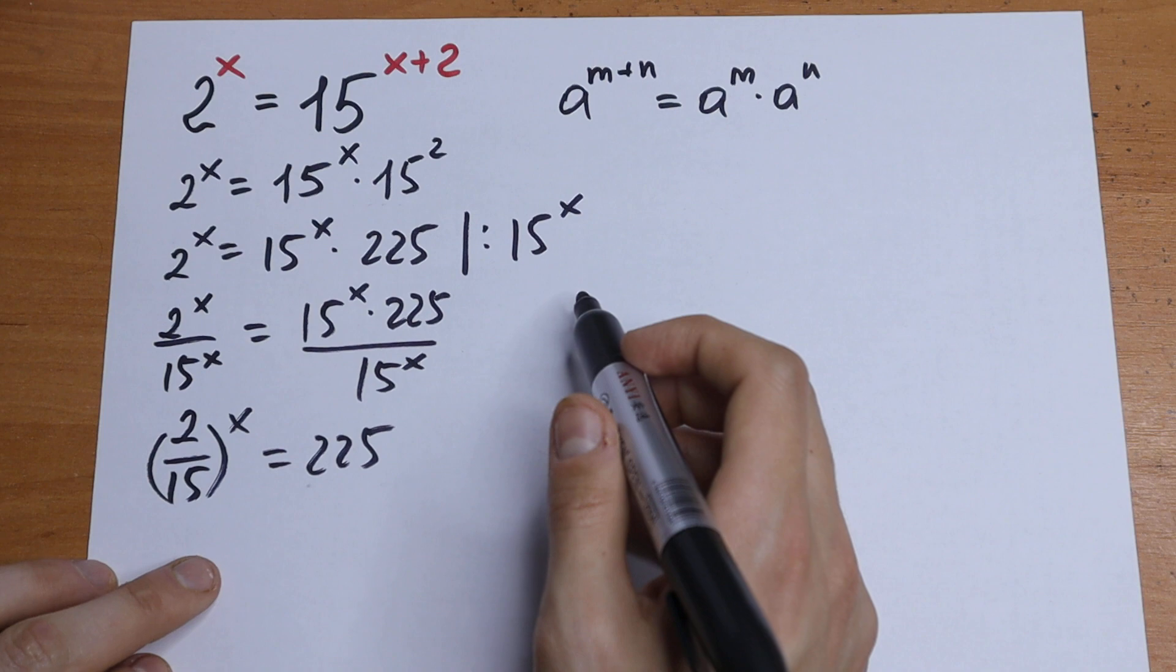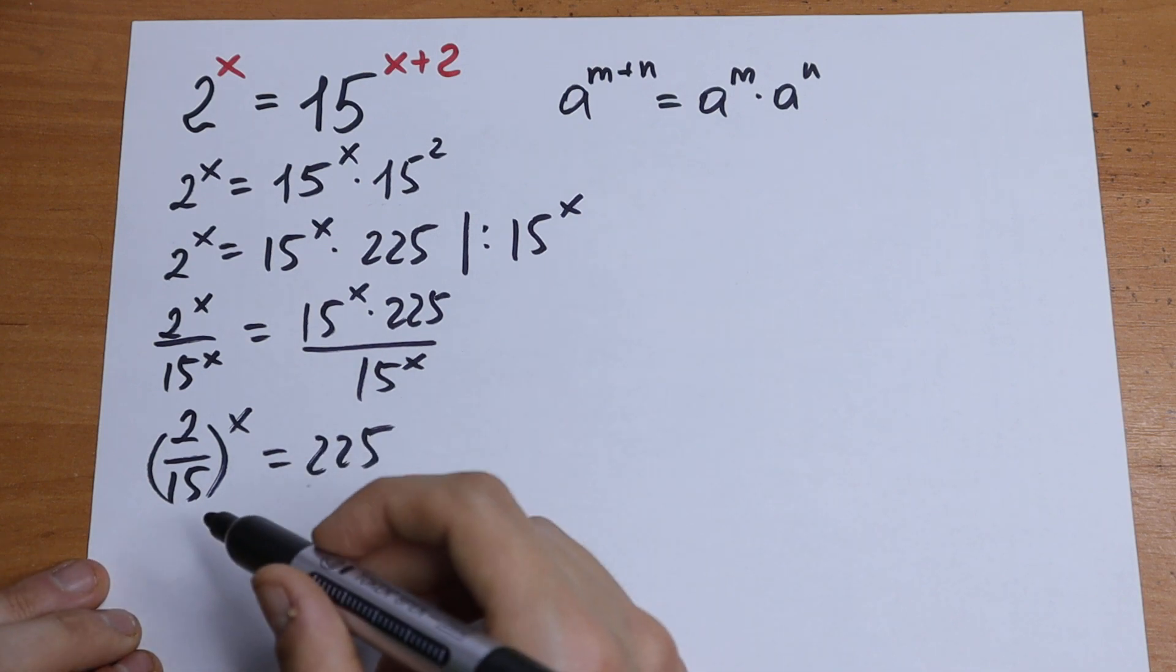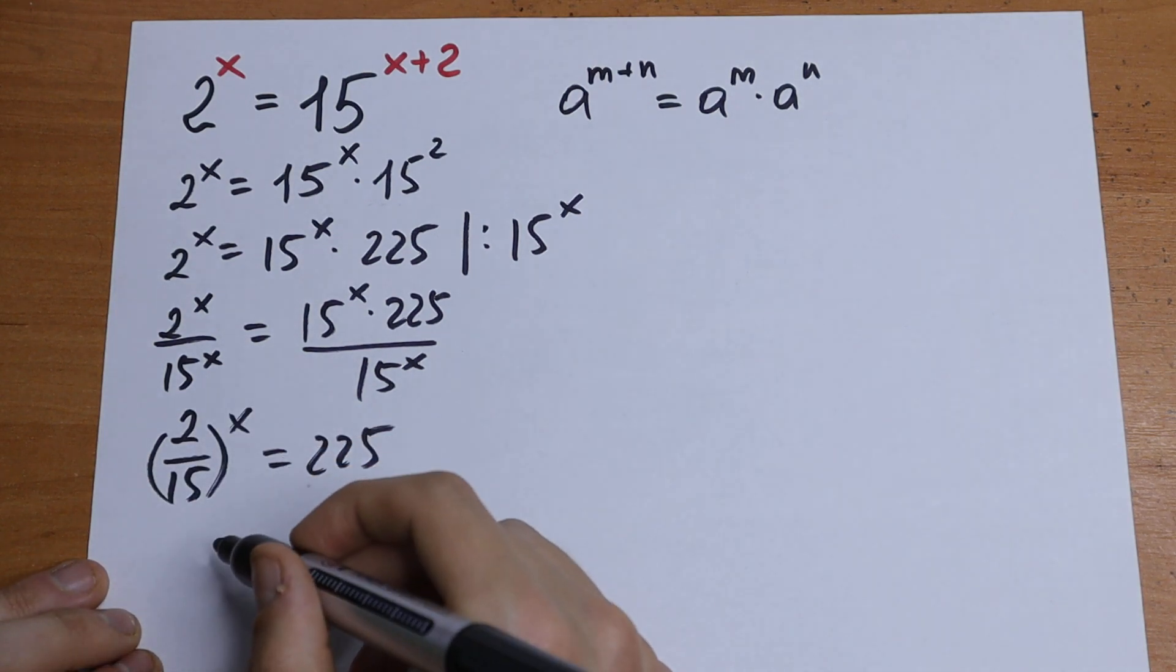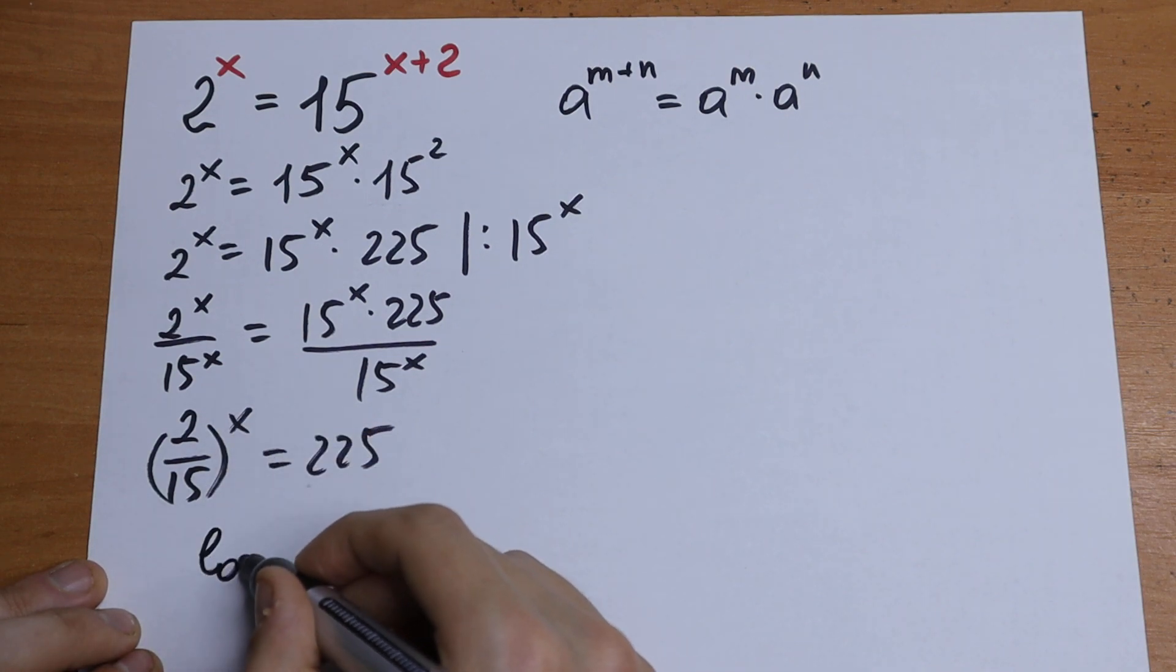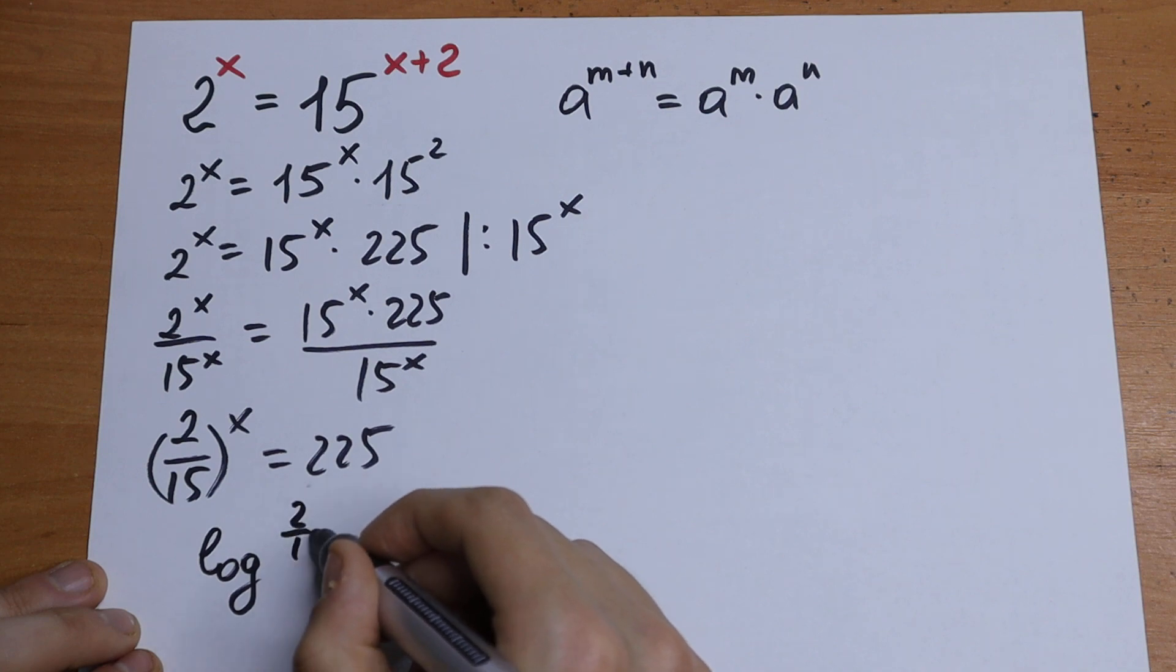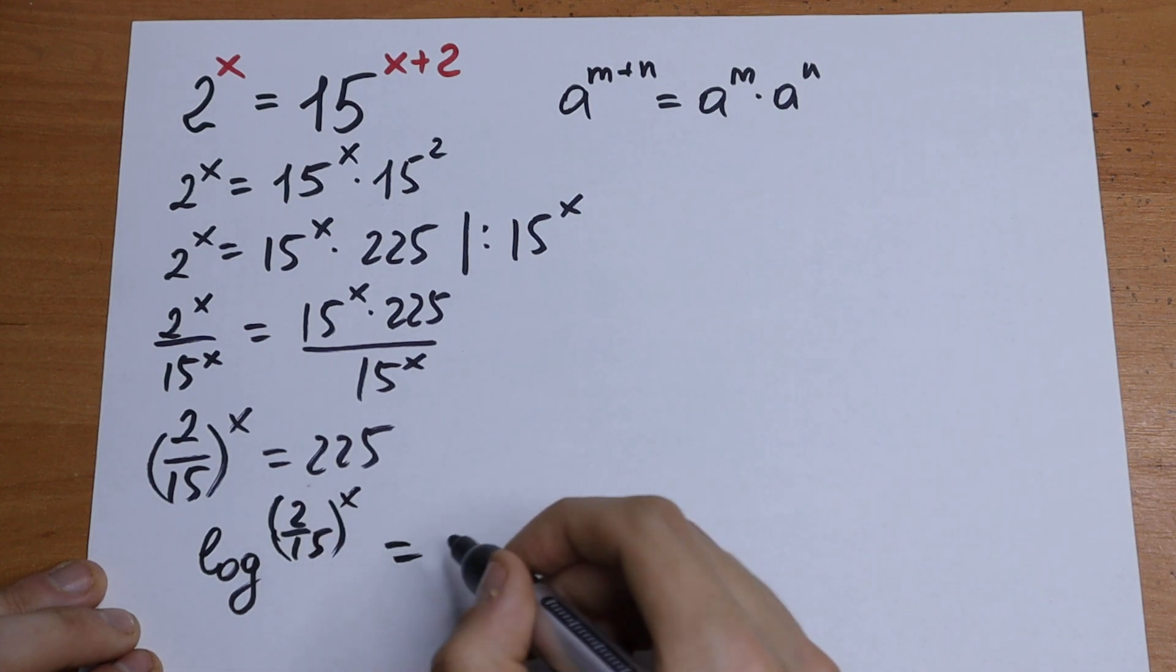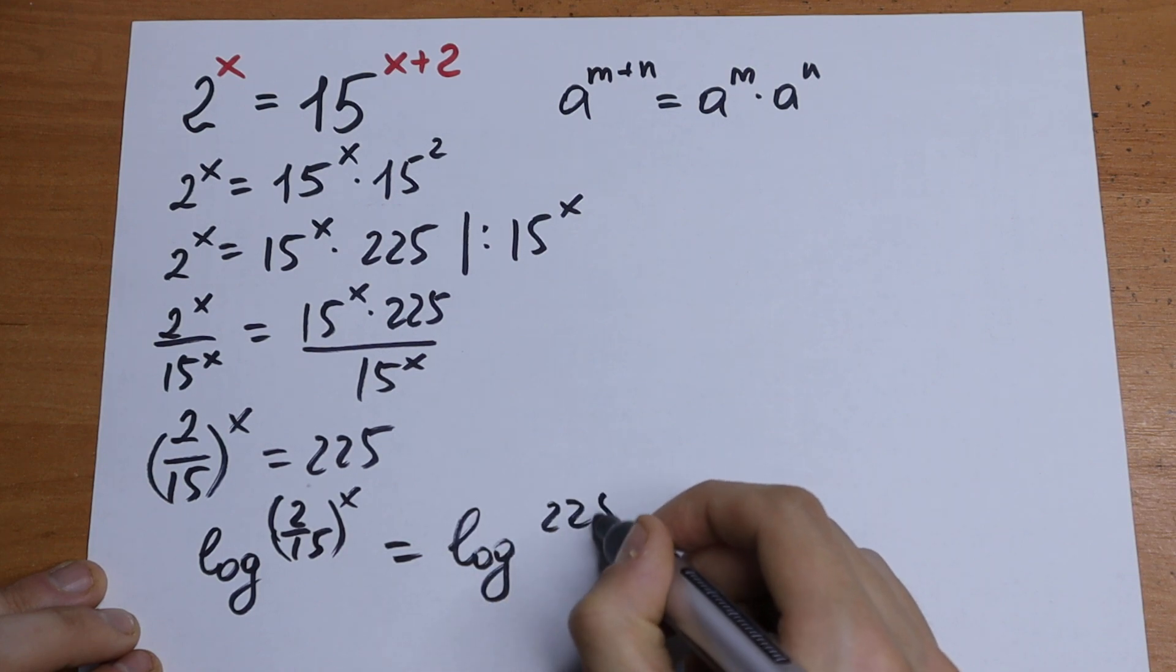Real good case for us, because we for sure can, should take log from both of the sides and for sure we will have only our x. So log 2 over 15 to the power x equal to log 225.